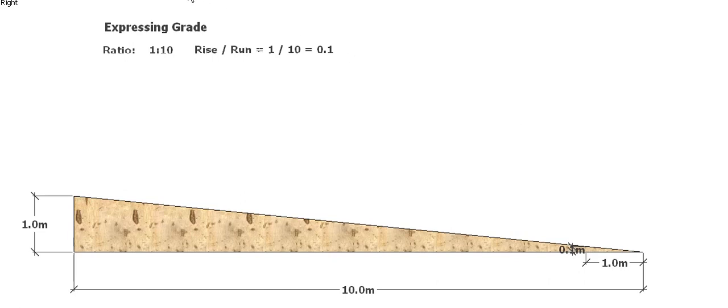If you times the 0.1 by whatever length you happen to need, you're going to get the actual rise at that point. So come two meters in, that's going to rise 200 millimeters. If you come three meters in, it's going to rise 300 millimeters, and so on. So the calculation you have to do is just divide the rise by the run to give you this little factor, and then you times that by the length that you need, and that'll give you the actual rise of the ground at that point.